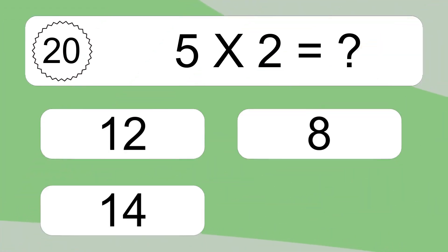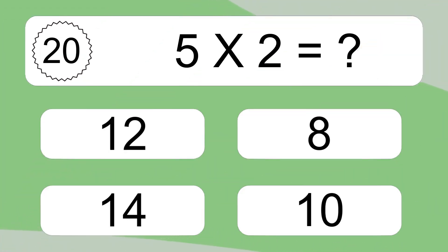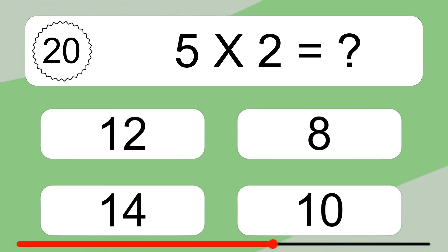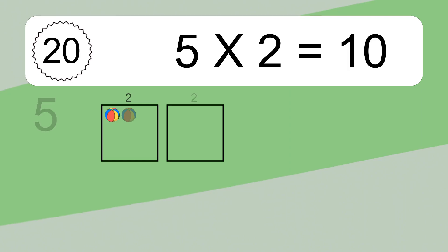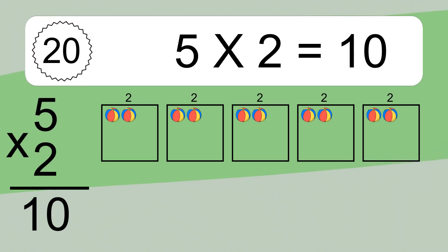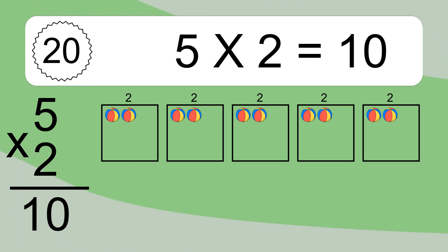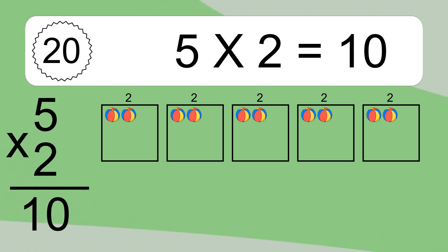5 times 2 equals what? 5 times 2 equals 10. If you count all the balls in all the boxes together, you will have 5 times 2 balls. This equals 10 balls.